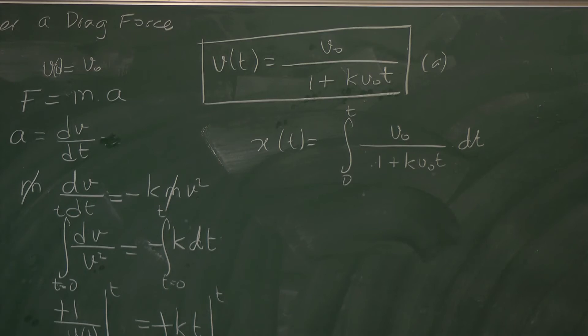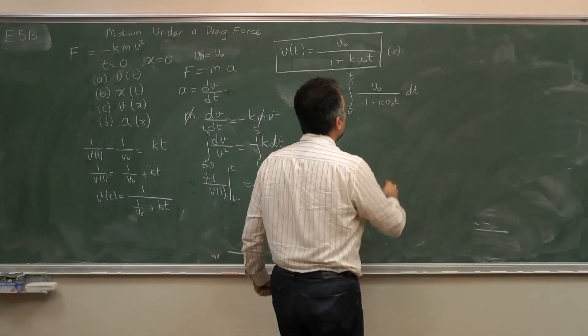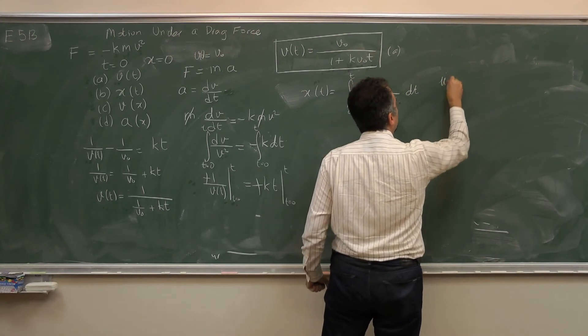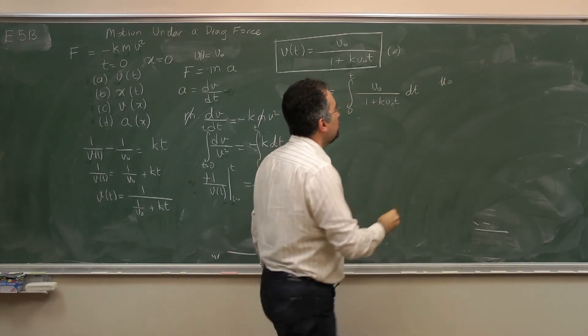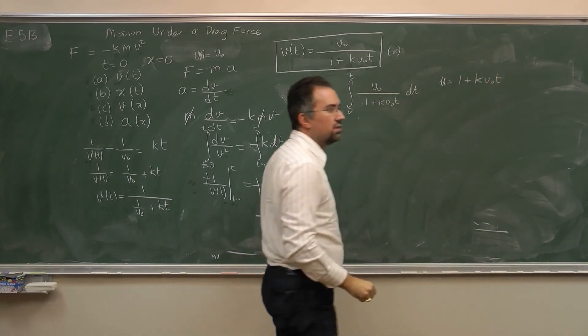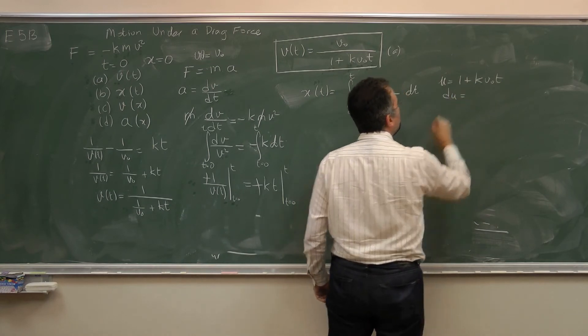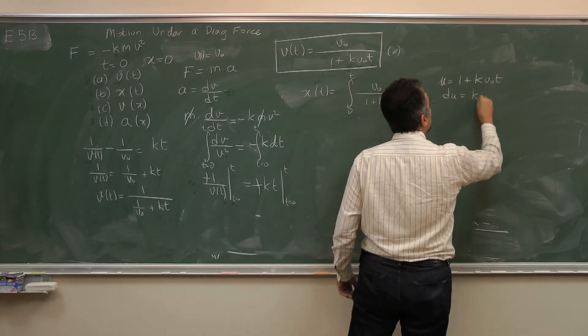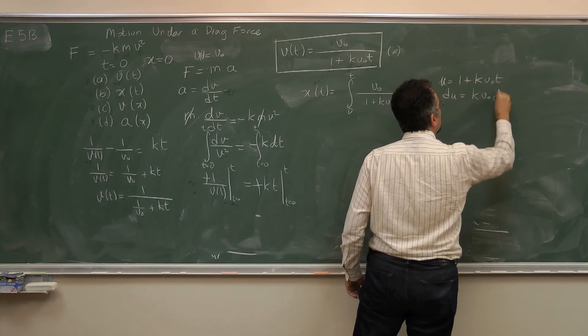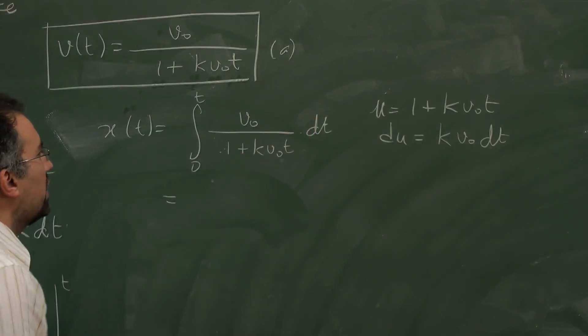Now I need a simple change of variables to make this work. The best change of variables I can think of is using u to be 1 plus k v0 t. In which case, du is equal to k v0 dt.